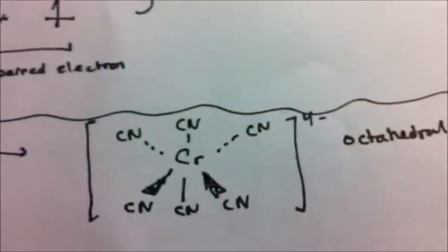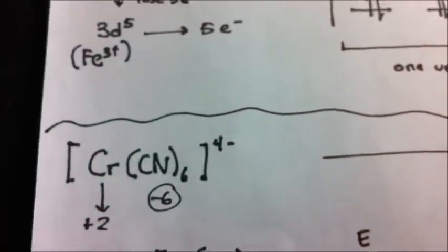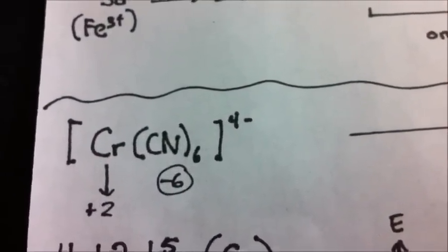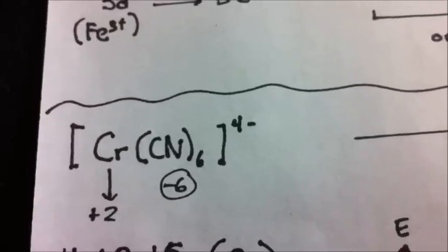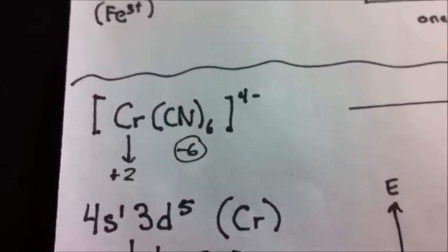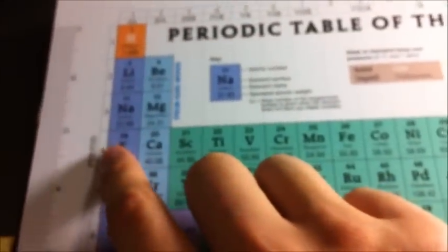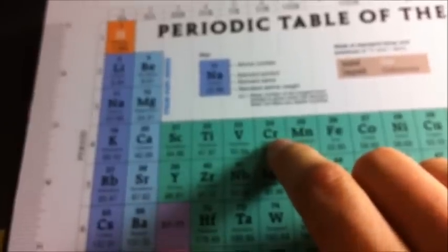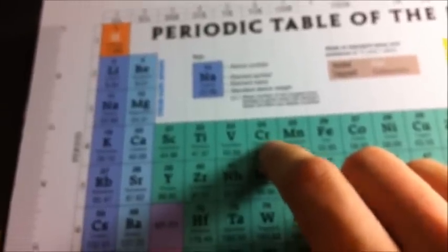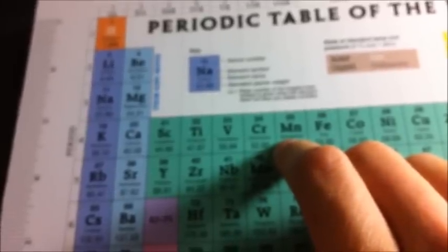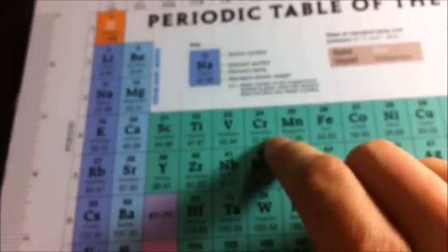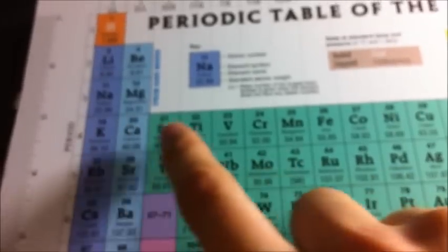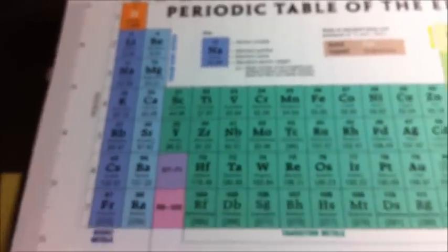Let's do another example: CrCN₆. This will also be an octahedral. The cyanides give a negative 6 total, and we want a negative 4 overall, so it's going to be a plus 2 oxidation state for chromium. Chromium is an exception because it's near the 3d⁵ orbital — instead of 4s², 3d⁴, we actually have 4s¹, 3d⁵, because we'd rather have a nearly half-complete 3d orbital.